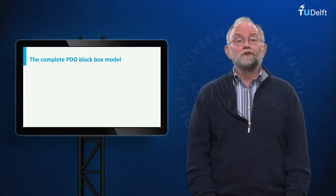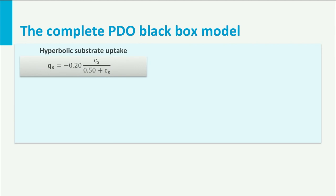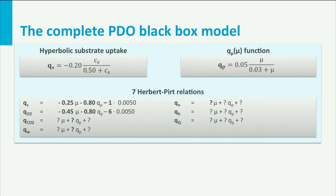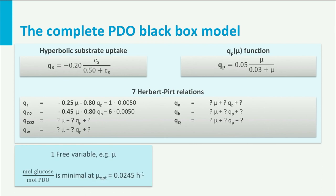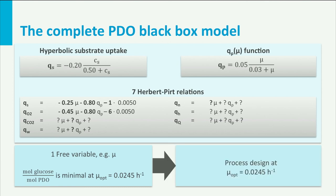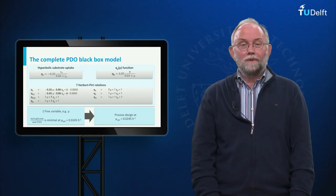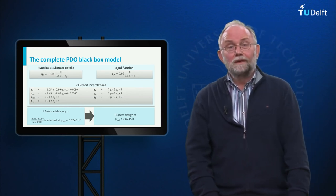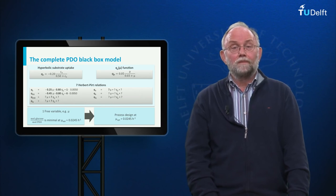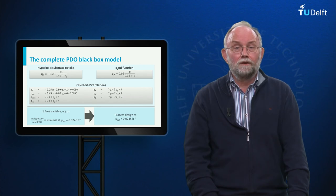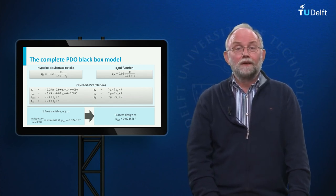We can now summarize our complete black box PDO model. It consists of a hyperbolic substrate uptake relation, a QP-mu relation, and 7 Herbert-Pert relations. This model has only one free variable, mu. When you choose a value for mu, all other Q-values and Cs can be calculated. The coefficients of the process reaction, such as QS over QP, depend only on mu and are easily calculated from the 7 Herbert-Pert relations and the QP-mu function. The black box model shows that consumed glucose per mole PDO is minimal at mu_optimal = 0.0245 h⁻¹. It is economically logical to design the PDO process at this value, which we will do later. See you in the next unit!